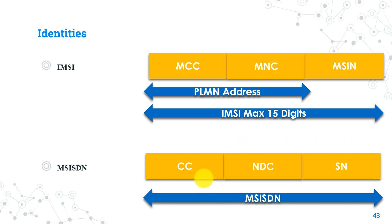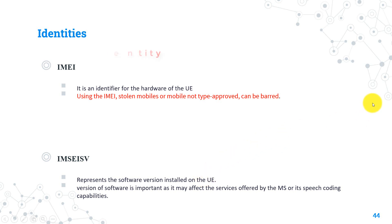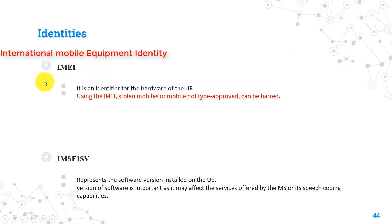Now let's talk about the IMEI. It stands for International Mobile Equipment Identity. IMEI is the identifier for each mobile equipment all over the world, so any mobile handset has a unique identifier that no other mobile handset shares. Usually this number is written on the mobile box, and it's important to keep this number saved, as if the mobile handset is lost or stolen, you can find it using this number. IMEI classifies any mobile handset in the network into three types: blacklist, whitelist, and graylist.